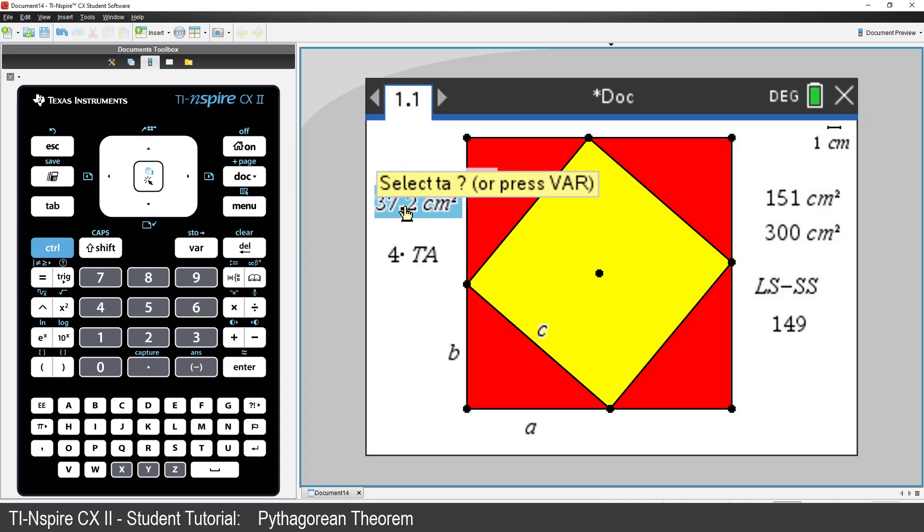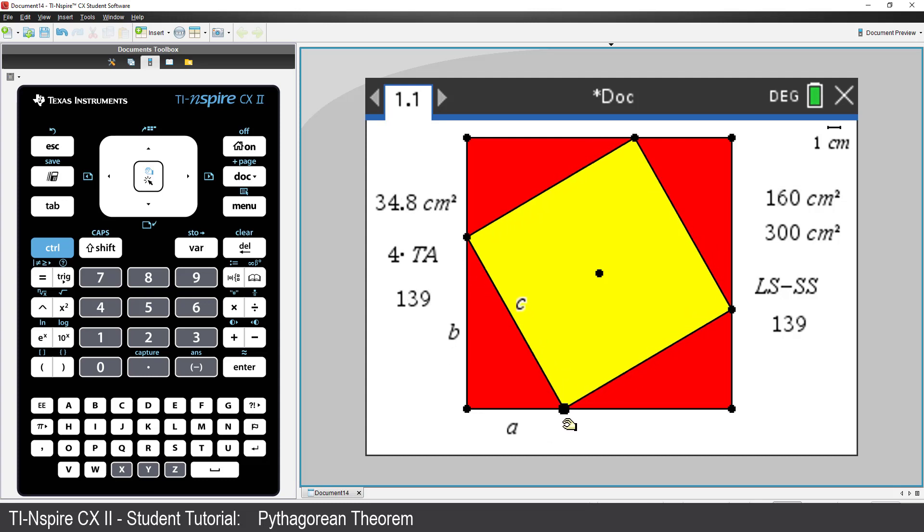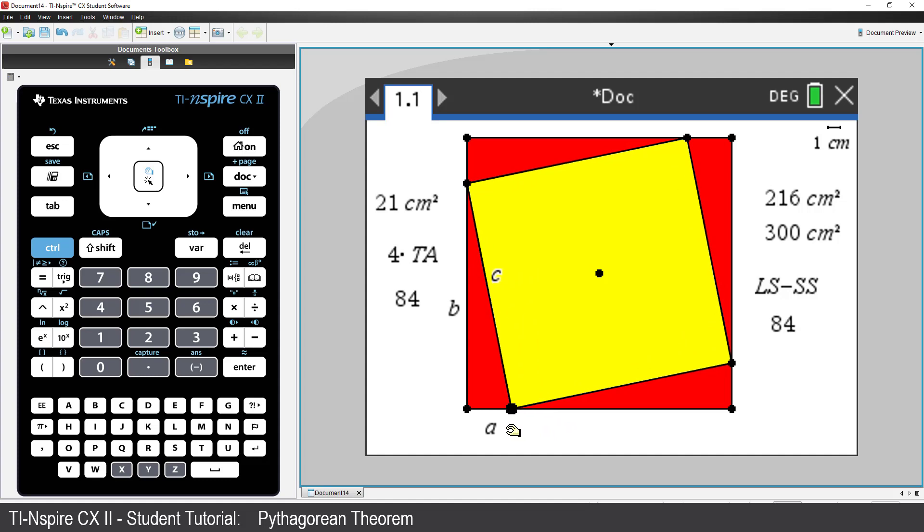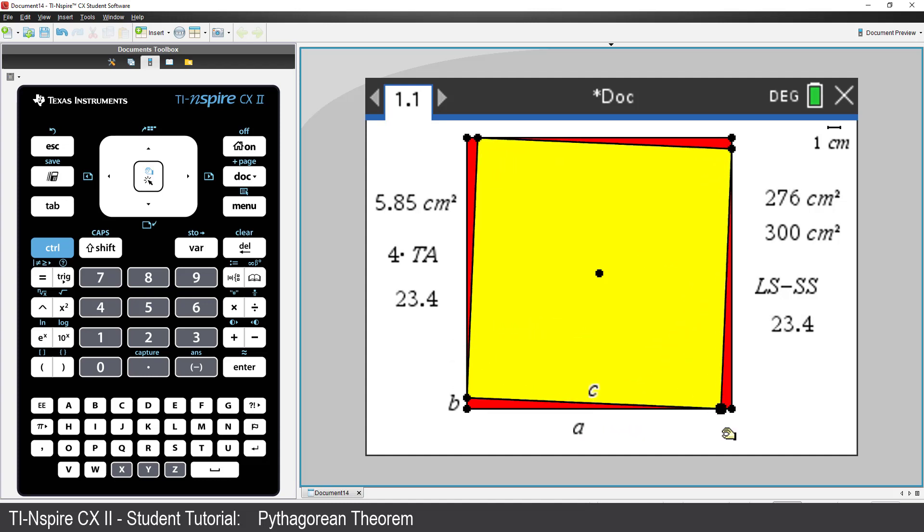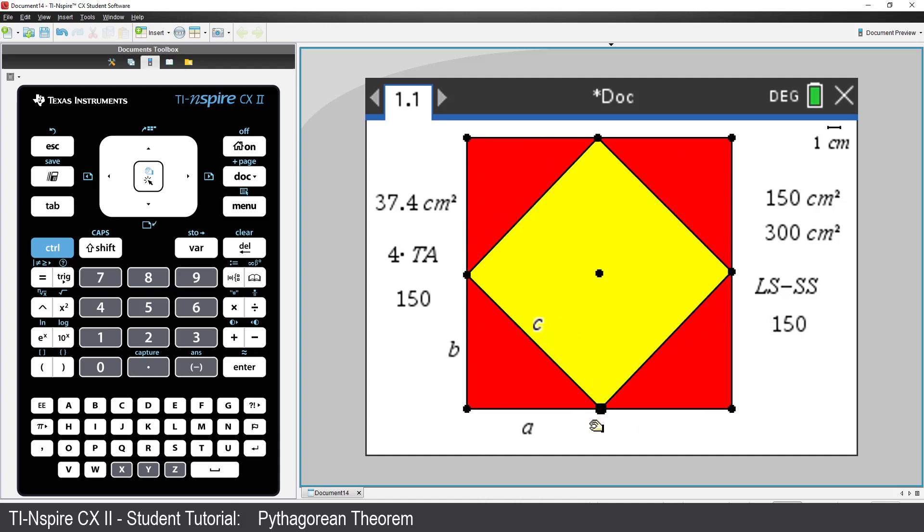So, our results shouldn't be surprising. If we cut the small square from the larger one, of course we should be left with the area of the four triangles. But go ahead and grab one of the vertices on the small square and drag it along the side of the larger square. Notice that all the areas change. So too the calculated results, but the sum of the triangle areas is always equal to the difference between the area of the large and small square.